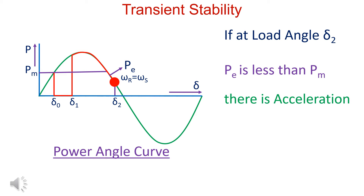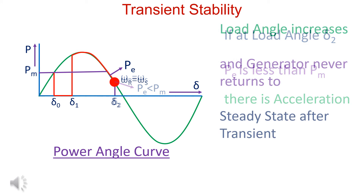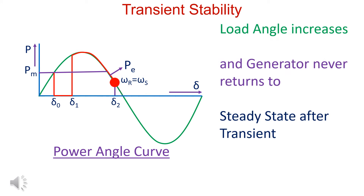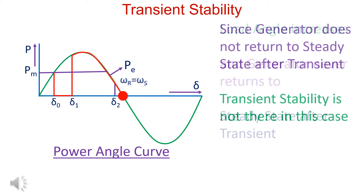If at load angle delta_2, Pe is less than Pm, there is acceleration and the load angle increases. The generator never returns to steady state after the transient, so transient stability is not achieved in this case.